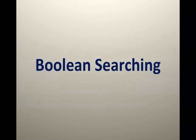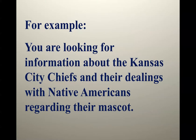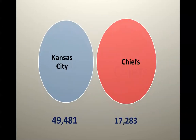We came up with no results whatsoever. If you click on the main page using Boolean searching, you're going to come up with different results. Boolean searching is named after a British mathematician and it's all about creating a more useful search statement. For example, you're looking for that article about the Kansas City Chiefs. If you do 'Kansas City Chiefs' in Gale, 'Kansas City' alone comes up with over 49,000 hits — that's a lot of articles to begin your search on. If you just put in 'Chiefs,' it's over 17,000.